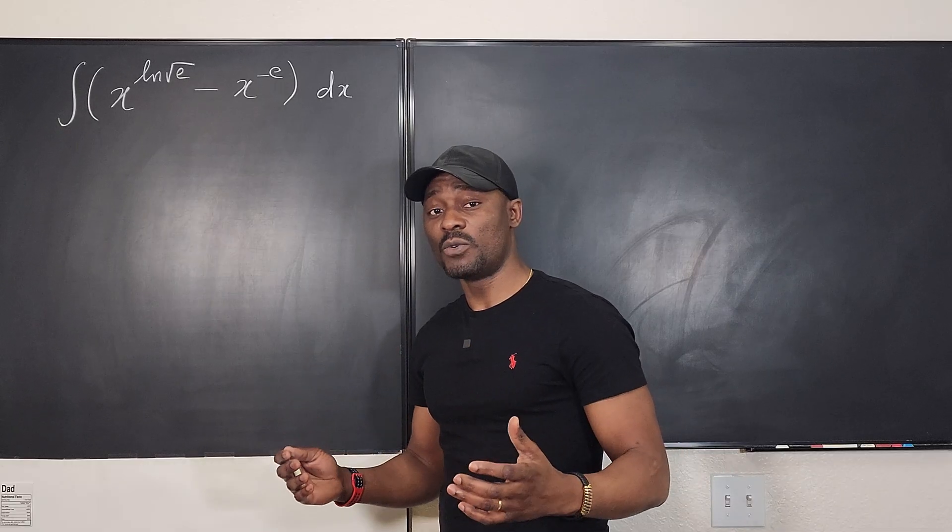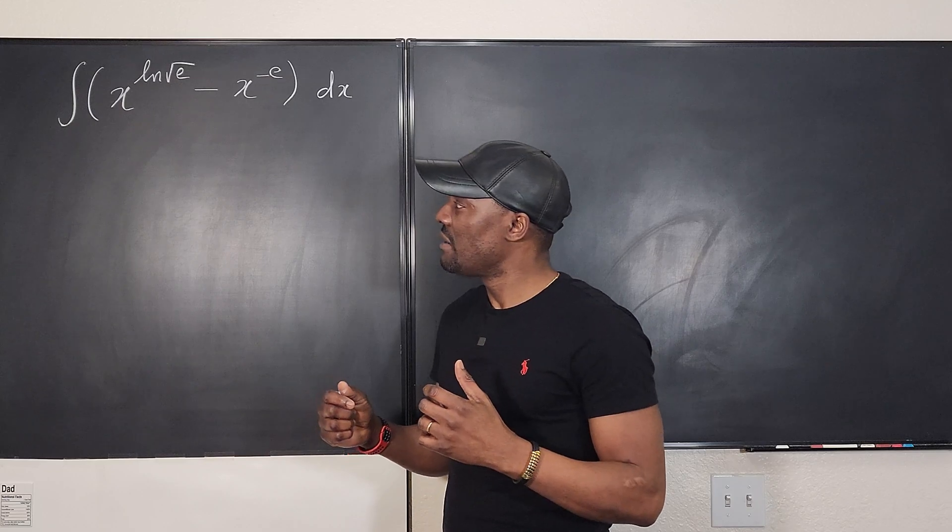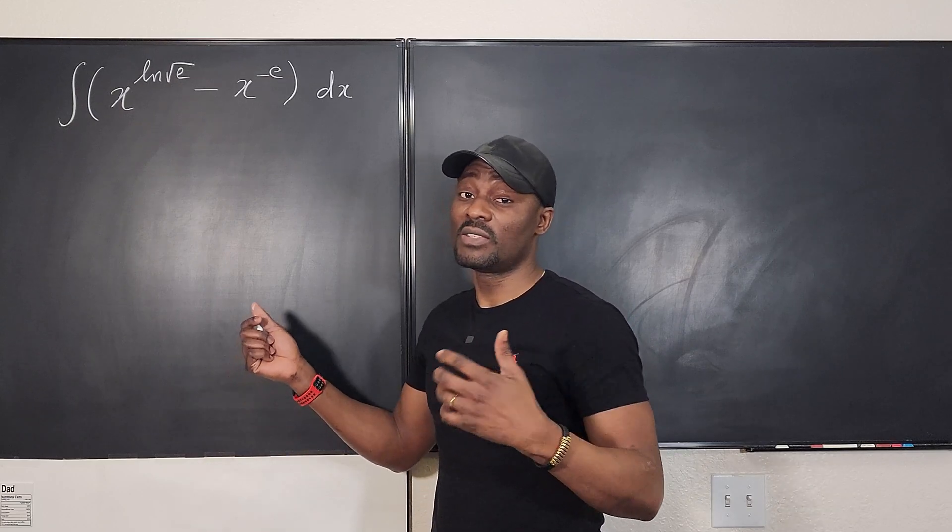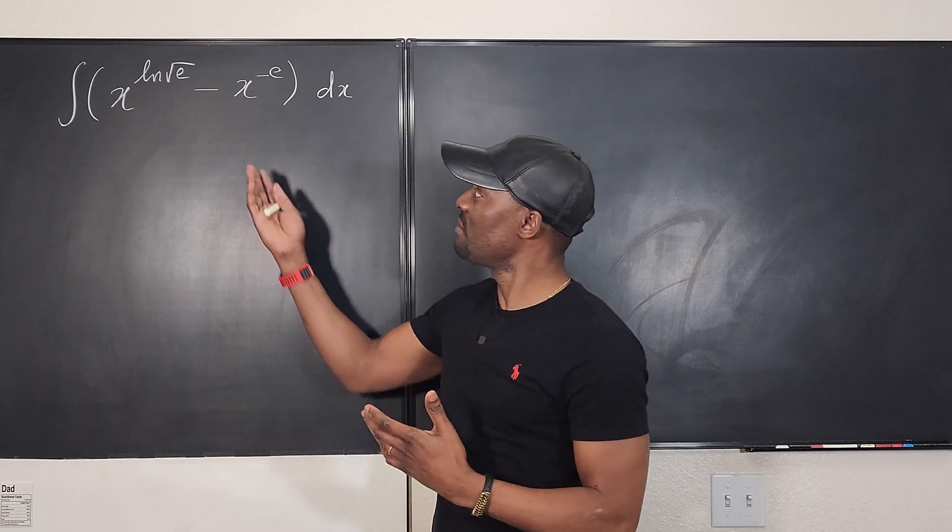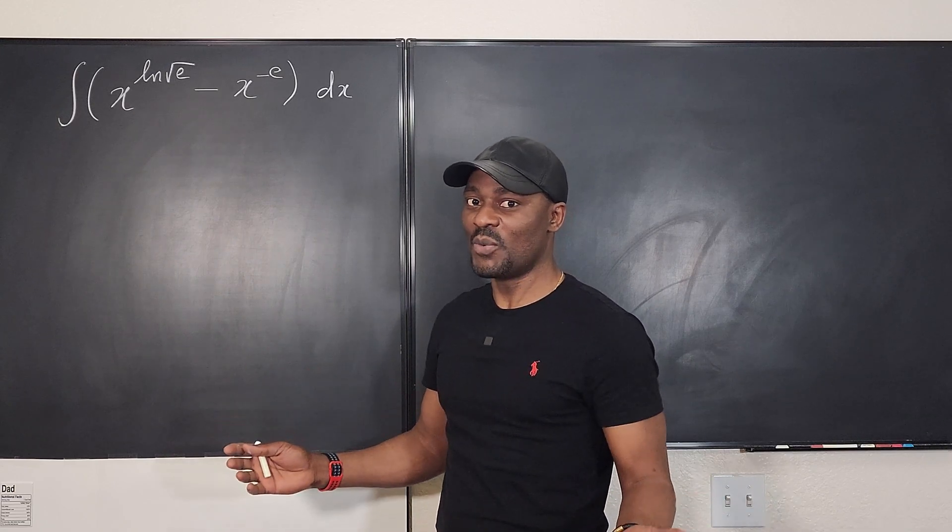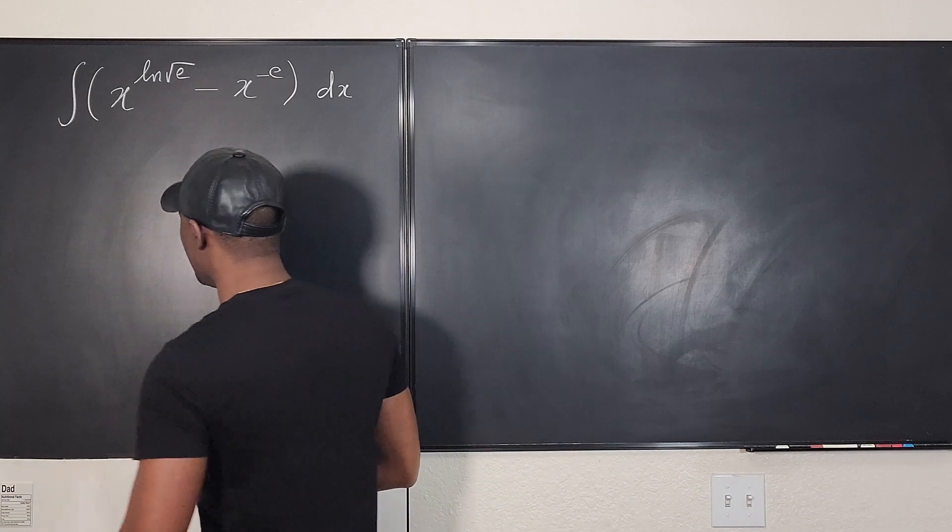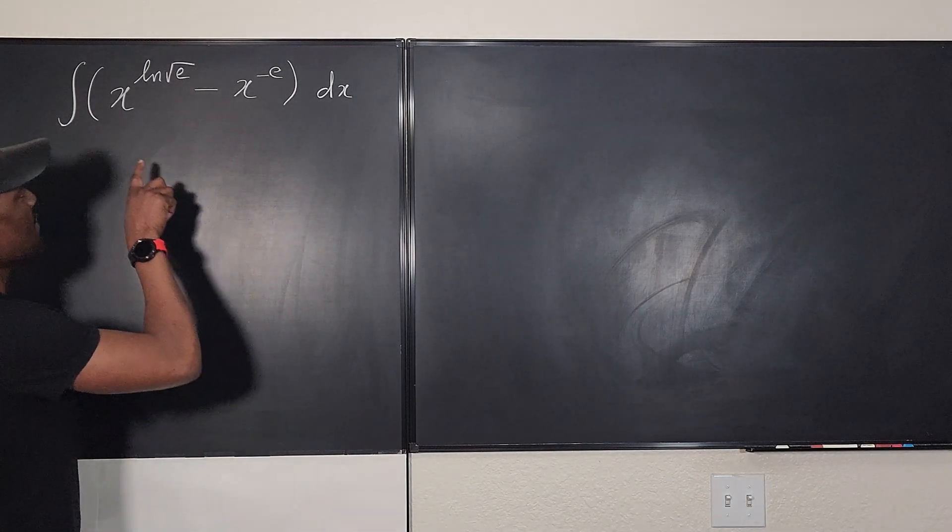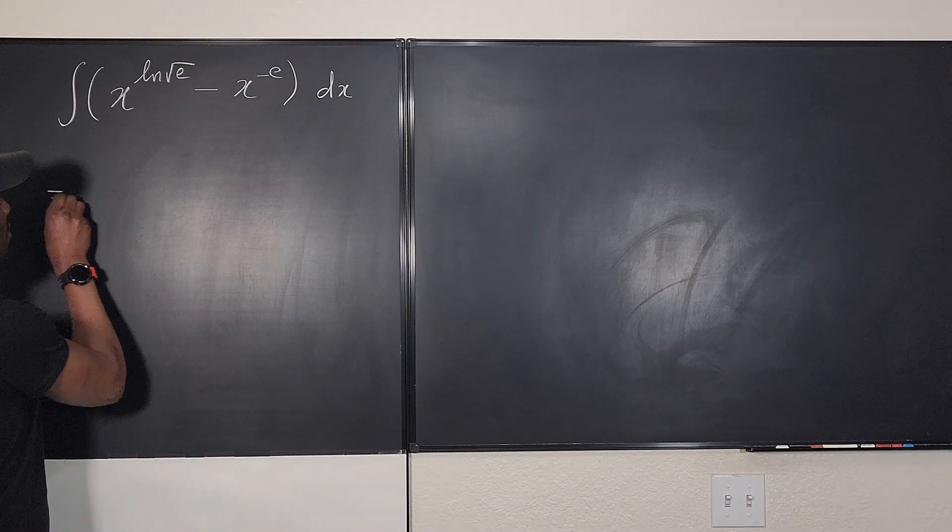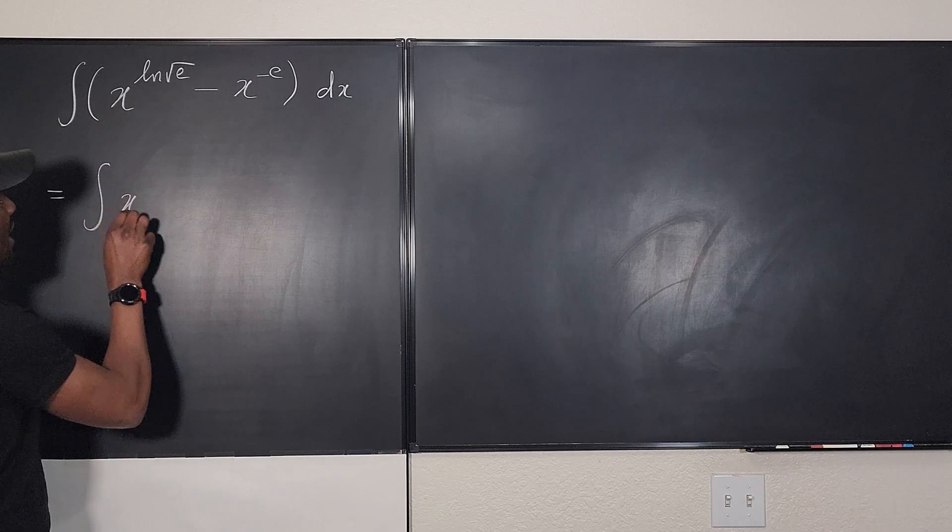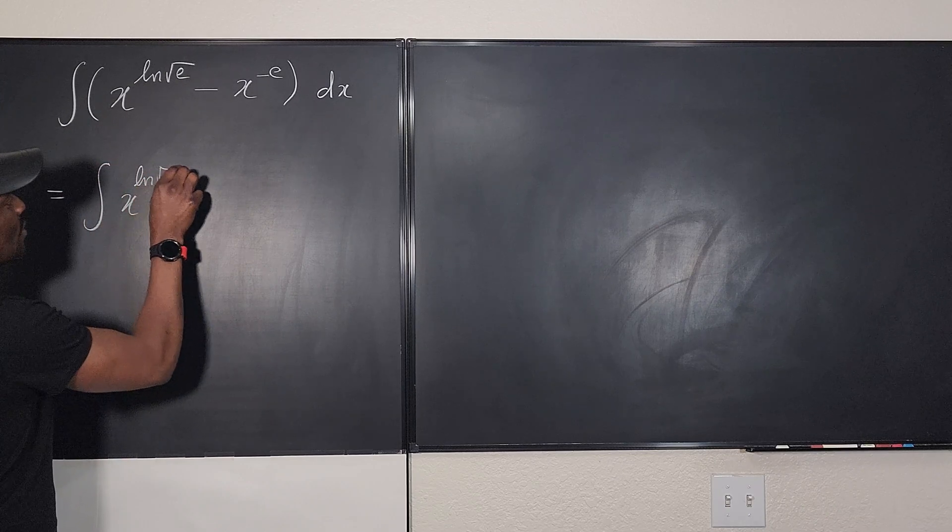We're just going to use the power rule to solve this problem. And if we have time, we might just try to simplify whatever they have, or you might simplify before you start, but I don't want to simplify. I just want to use the power rule. So this is what I'm going to do. I'm going to say that this is equal to the integral of X to the natural log of square root of E.